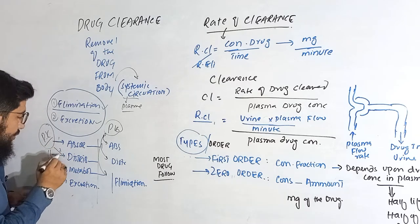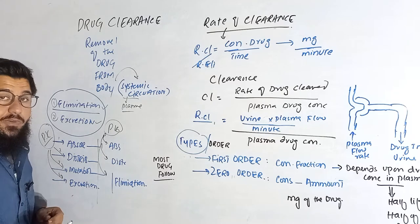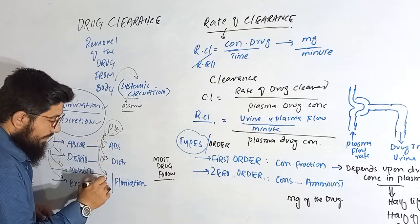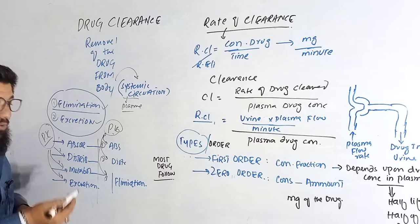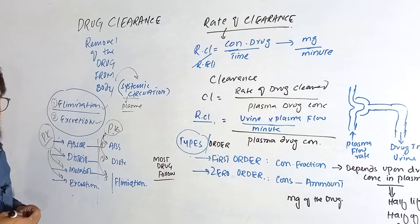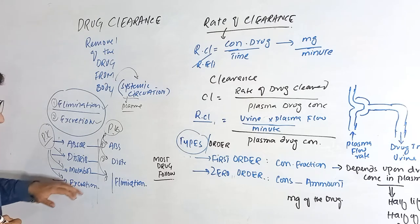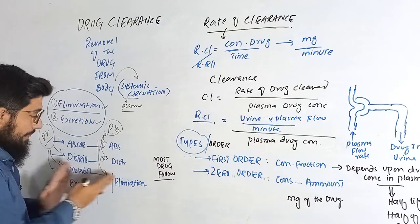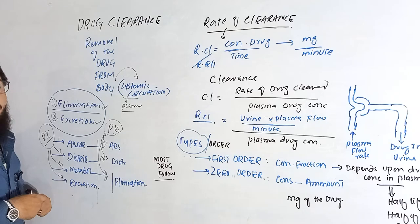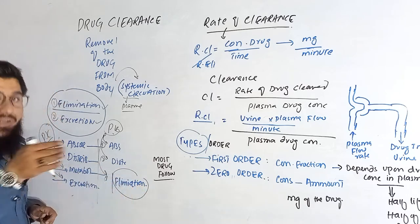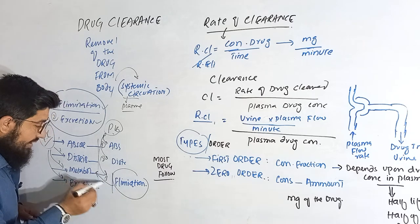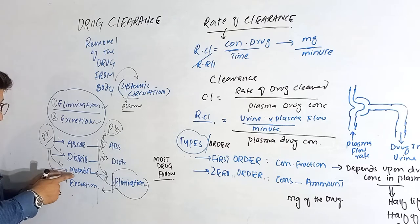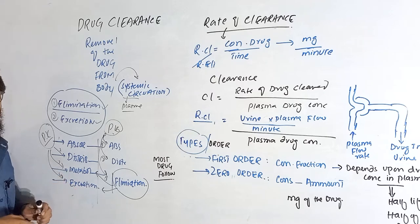The difference is this: elimination is actually an umbrella term which covers both metabolism and excretion. If you say elimination, you are actually saying the combination of metabolism plus excretion. So if you are writing pharmacokinetics with four terms — absorption, distribution, metabolism, excretion — you must not use the word elimination instead of excretion.